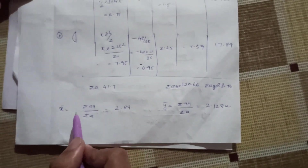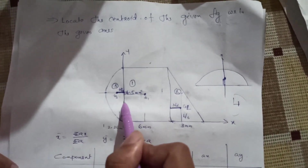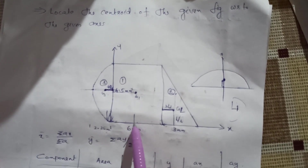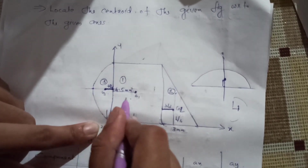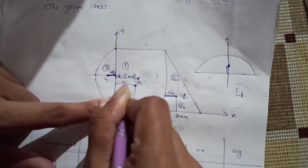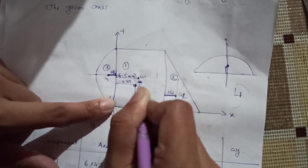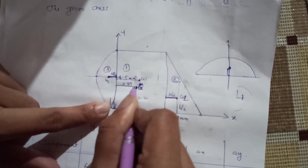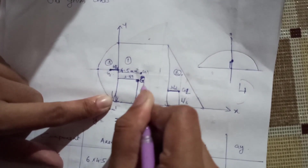The answer is x̄ — the distance from the reference y-axis to the centroid — is 2.89 mm. And ȳ — the distance from the reference x-axis to the centroid — is 2.12 mm. Therefore, the centroid G of the total composite figure is located at (2.89, 2.12) mm.